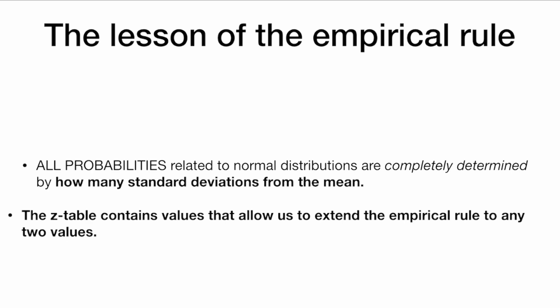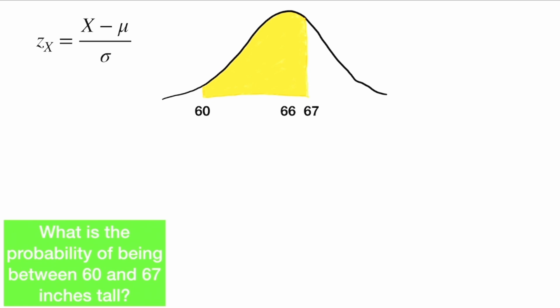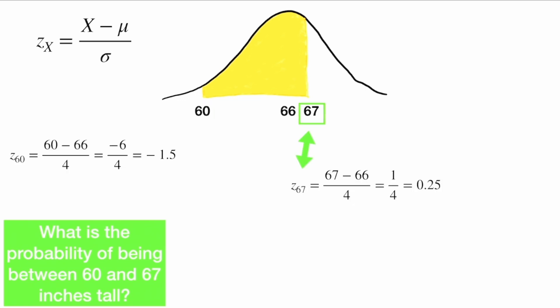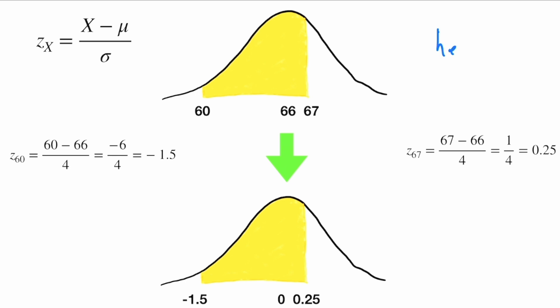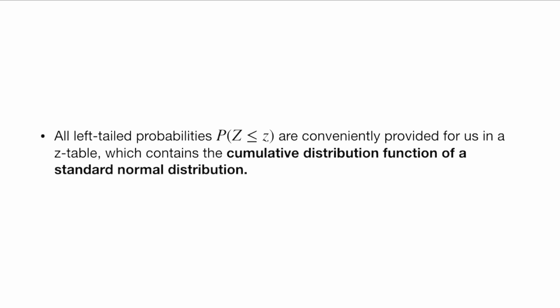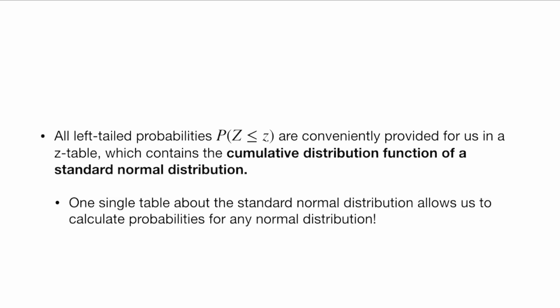We can also use this to find probabilities that are not just one, two, or three standard deviations away. The z-table, which is often found in the back of a statistics textbook, contains values that allow us to extend the empirical rule to any two values. So one single table about the standard normal distribution — the z-distribution — allows us to calculate probabilities for any normal distribution. For instance, what is the probability of being between 60 and 70 inches tall? First, we want to know the z-scores for 60 and 67. The z-score for 60 is x minus mu over sigma: 60 minus 66 over 4, giving a z-score of negative 1.5. 60 is 1.5 standard deviations below the mean. Similarly, the z-score for 67 is 0.25 — 67 is one quarter of a standard deviation above the mean.